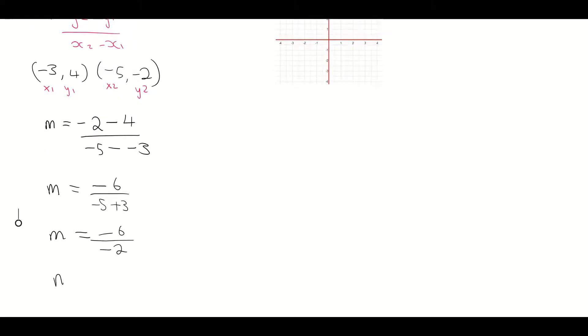And we'll solve that a little bit further. Minus divided into minus is plus, 2 into 6 is 3. So my slope here is positive 3.